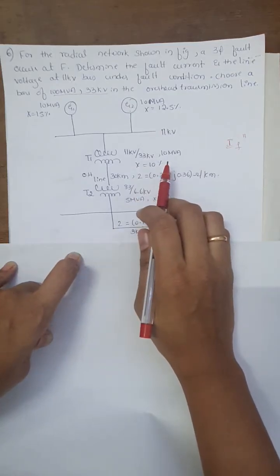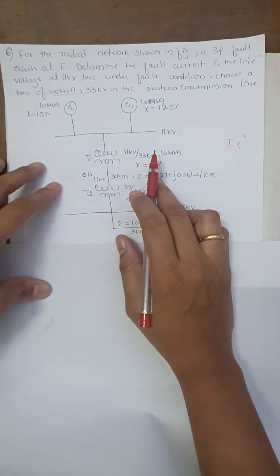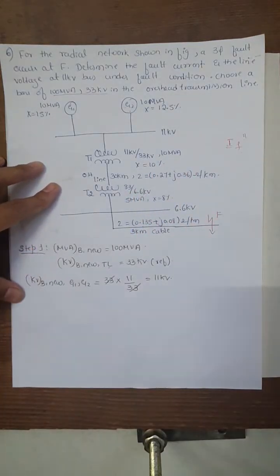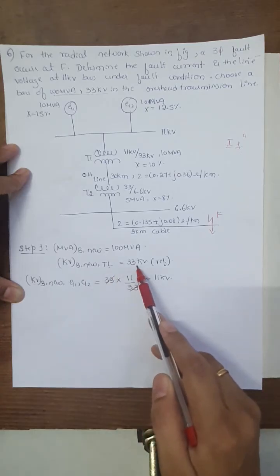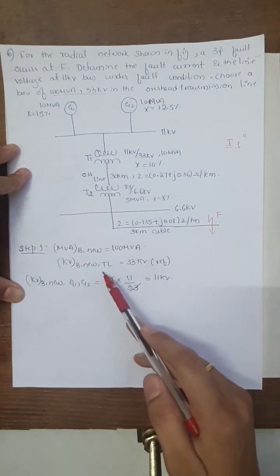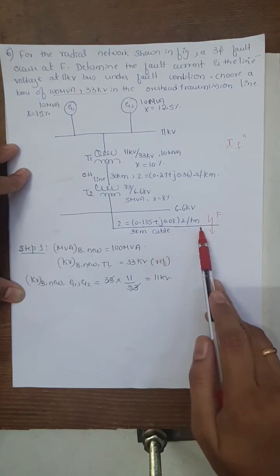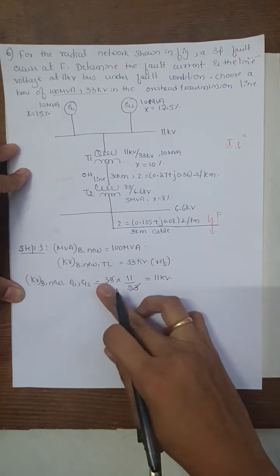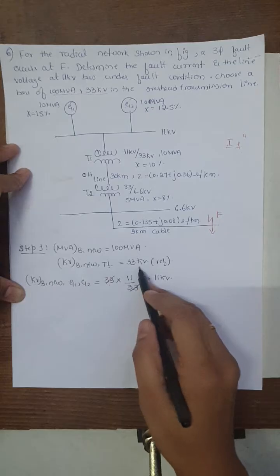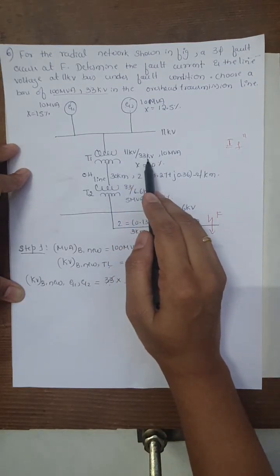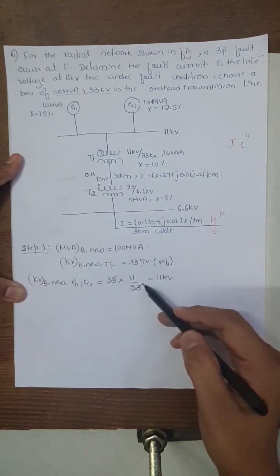Step one: choosing base power, base voltage, and calculating reactances. MVA base is 100 MVA as given, and the kilovolt base for the transmission line is 33 kilovolt. To find the base voltage for generators 1 and 2 on the LT section, we use the formula: KV base on HT line multiplied by low voltage rating divided by high voltage rating, giving 11 kilovolt.